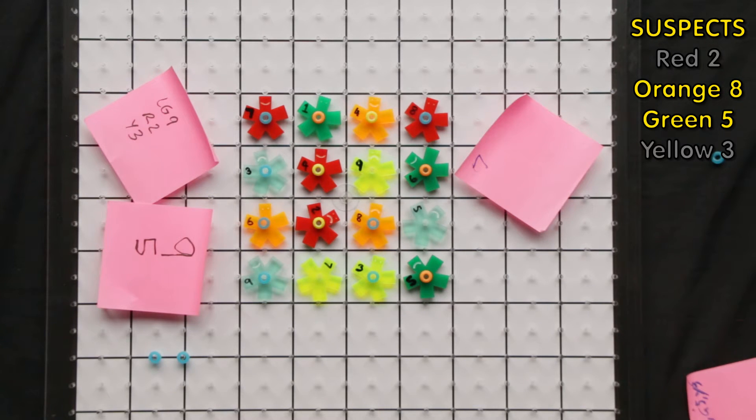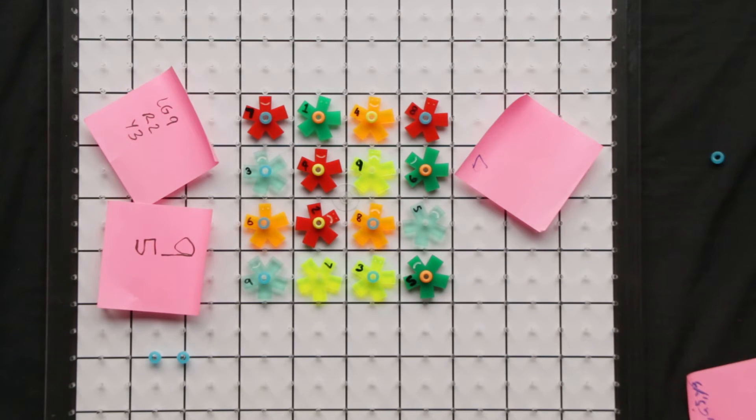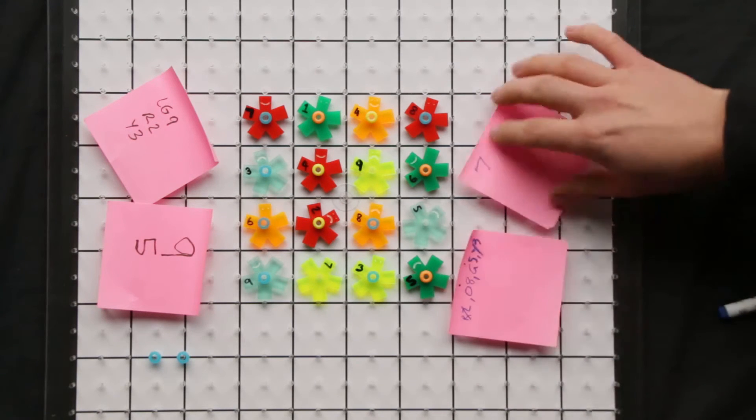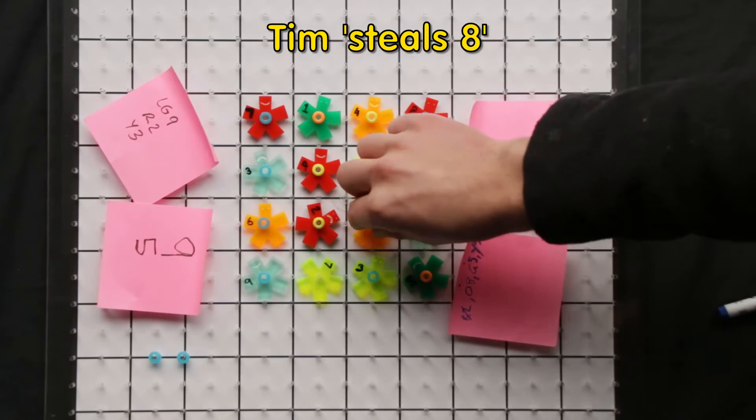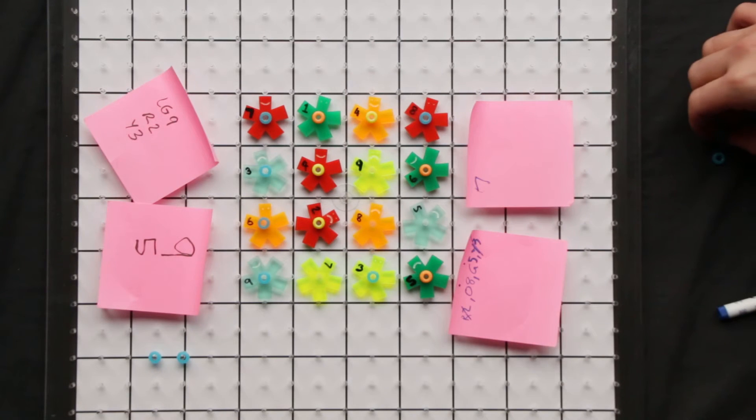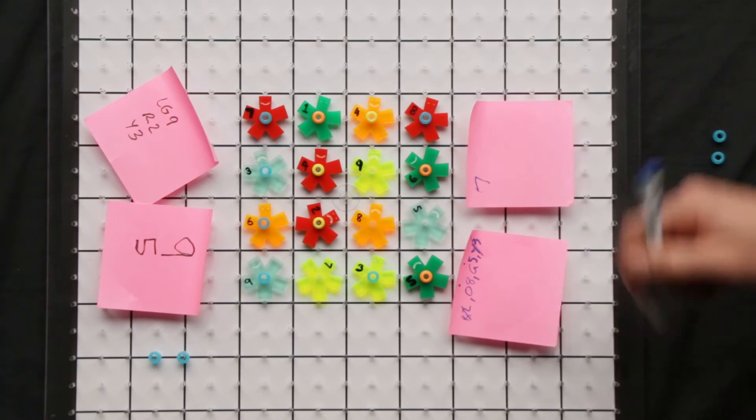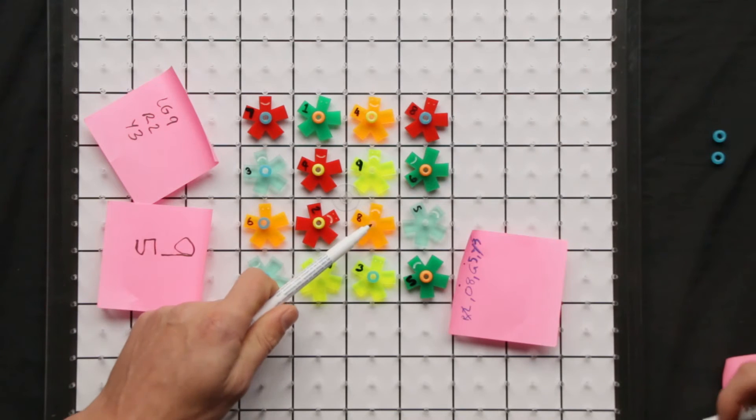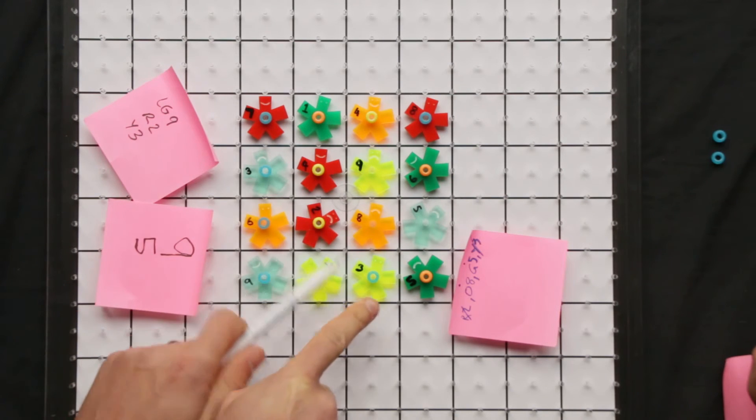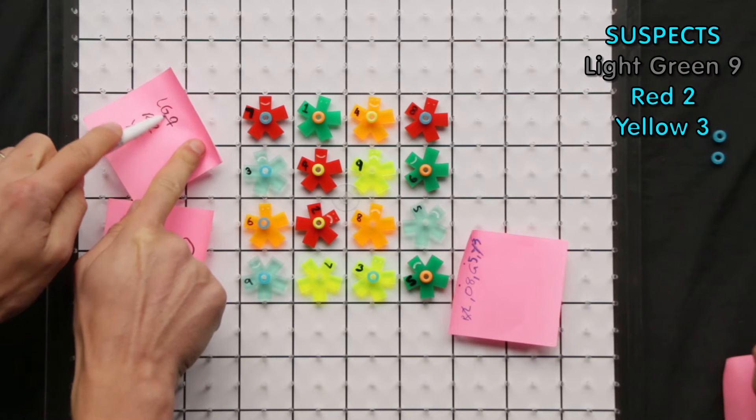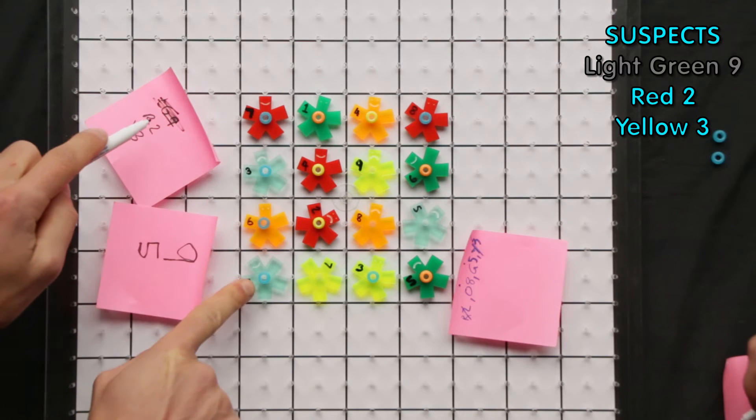Now Tim's just stolen from orange eight, which means he has to be one of these three around here. Light green nine? He can't be, because that's over there. Red two? He can be.